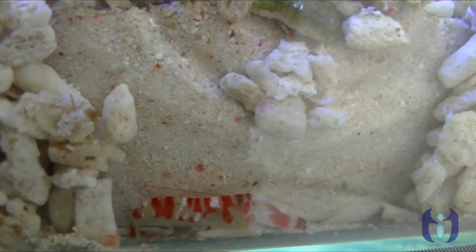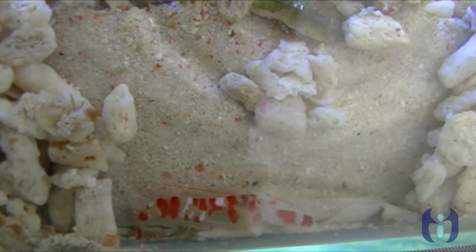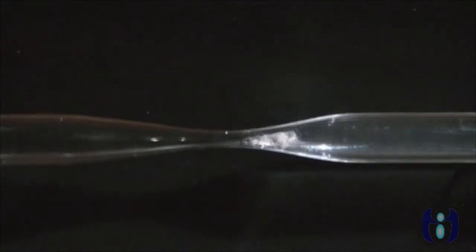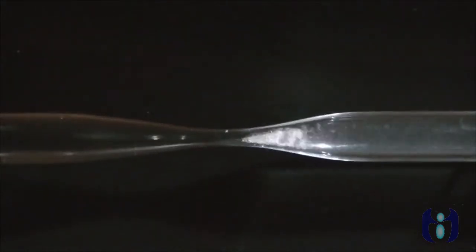Pistol shrimp also creates cavitation. At narrow region, cavitation is generated. Then cavitation is collapsed at wider region.